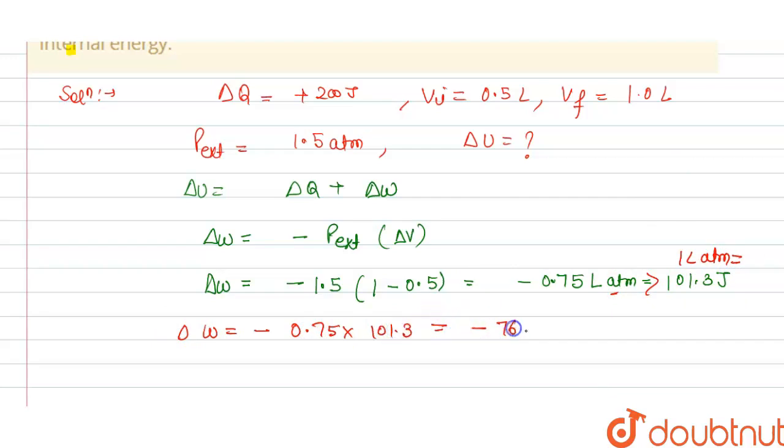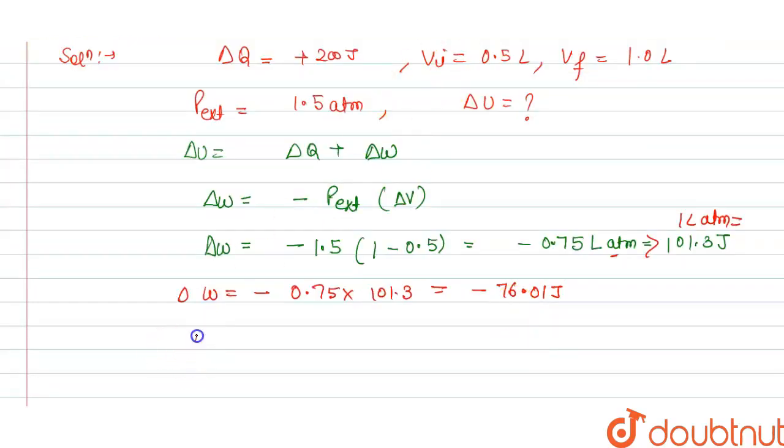This is minus 76.01 joule. Now if we put value, we get delta U is equal to delta Q that is plus 200 and plus minus will become minus 76.01. This is plus 123.98.